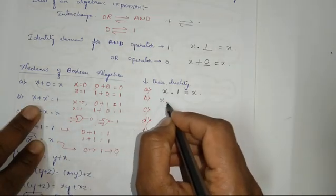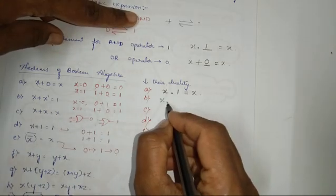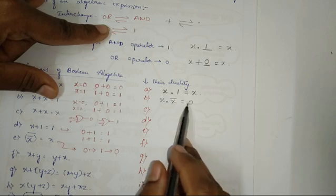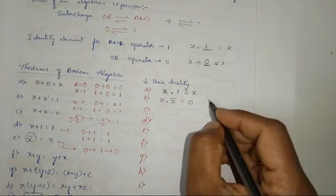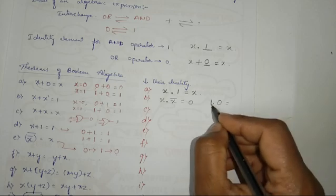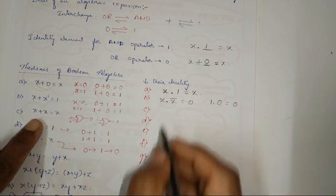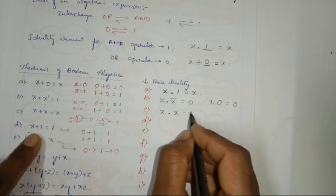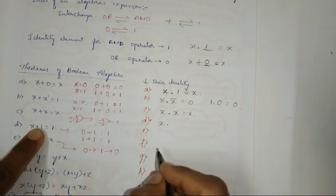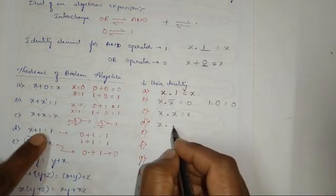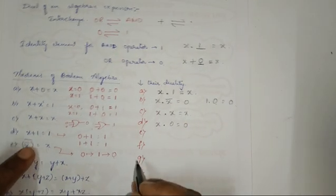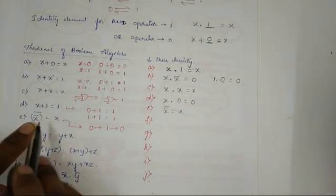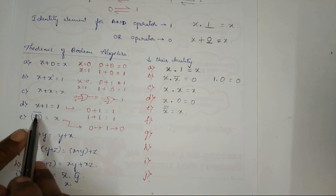The dual of x plus x̄ equals 1: replace OR with AND and 1 with 0, giving x AND x̄ equals 0. Verified: if x is 1, then 1 AND 0 is 0. The dual of x plus x equals x: replace OR with AND, giving x AND x equals x. The dual of x plus 1 equals 1: replace OR with AND and 1 with 0, giving x AND 0 equals 0. The double complement x double-bar equals x remains as-is, since there are no AND, OR, 0, or 1 terms to replace.